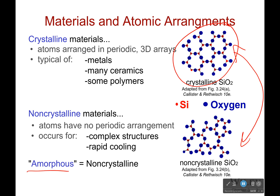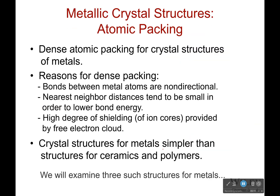Another term for non-crystalline is amorphous. You may have heard that glass is an amorphous solid, and people might tell you that means it melts slowly — no, it doesn't mean that. It just means that it has a non-repeating structure.